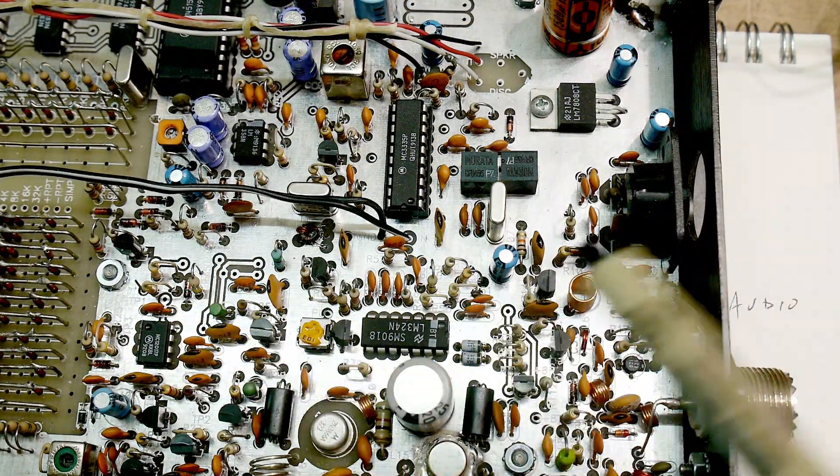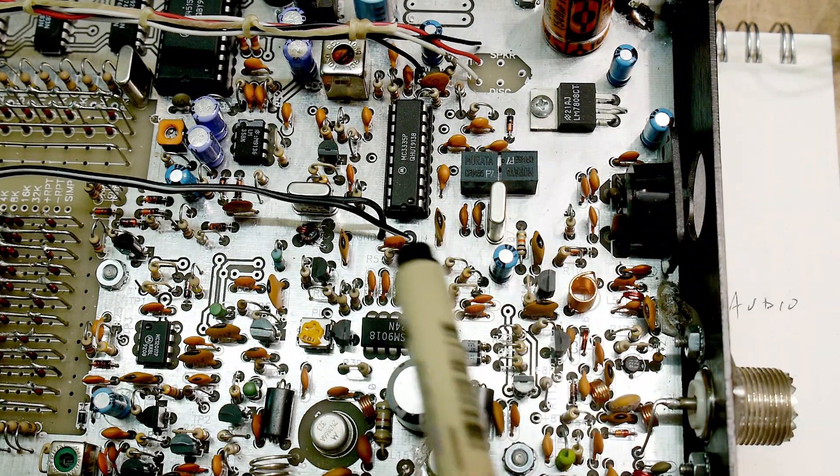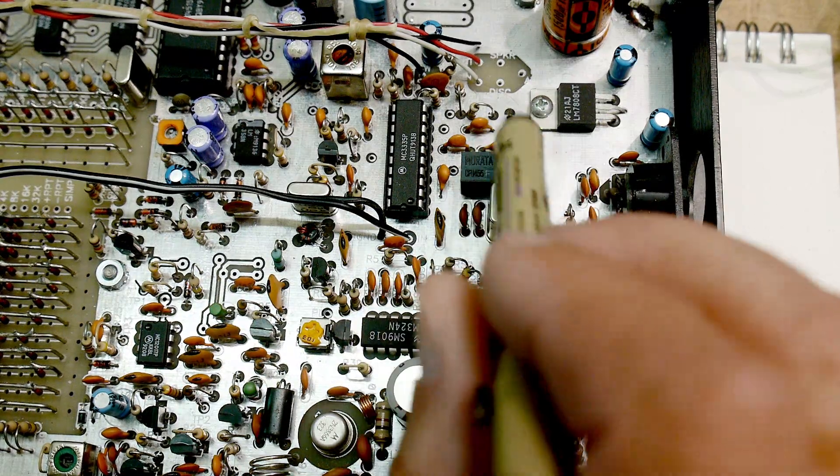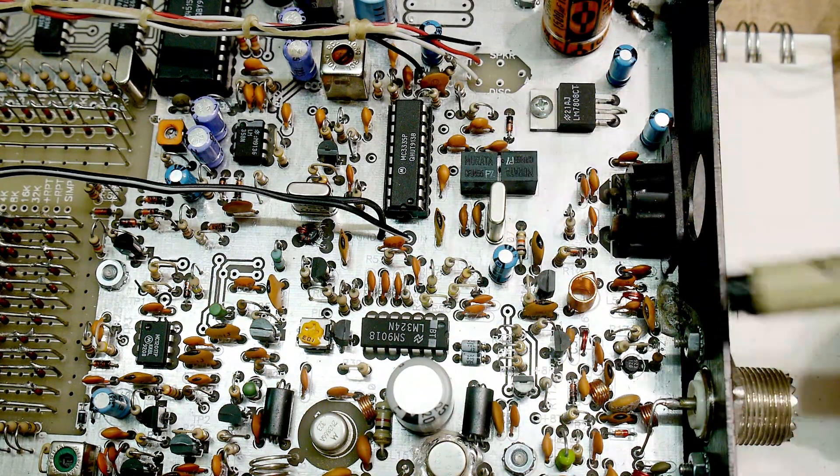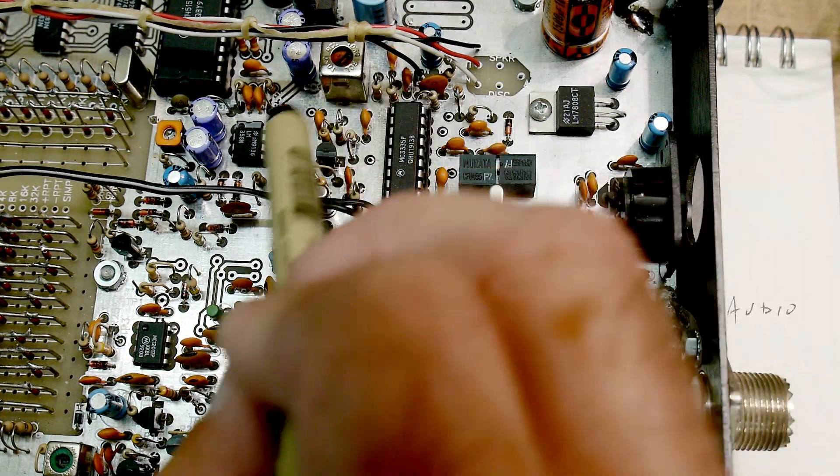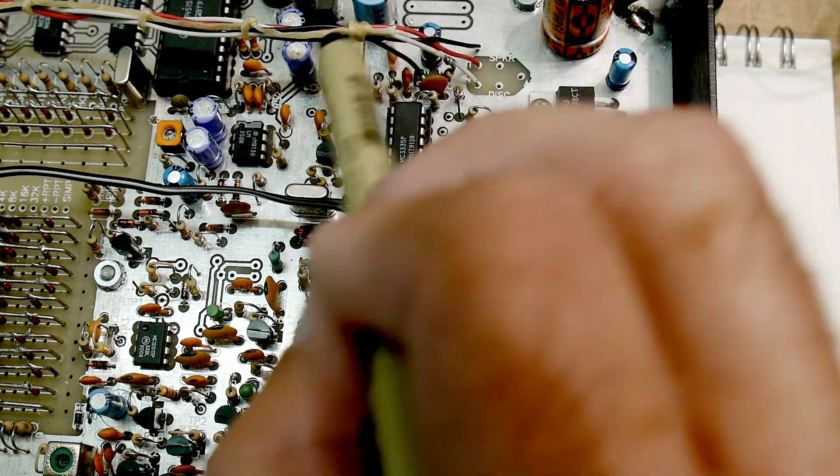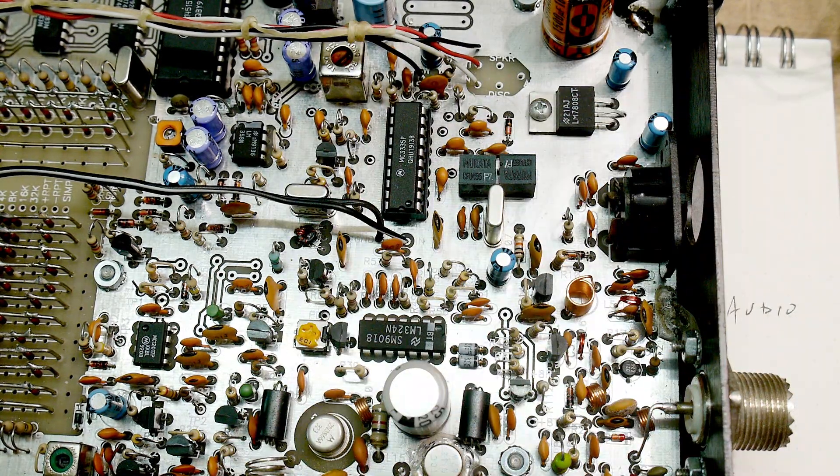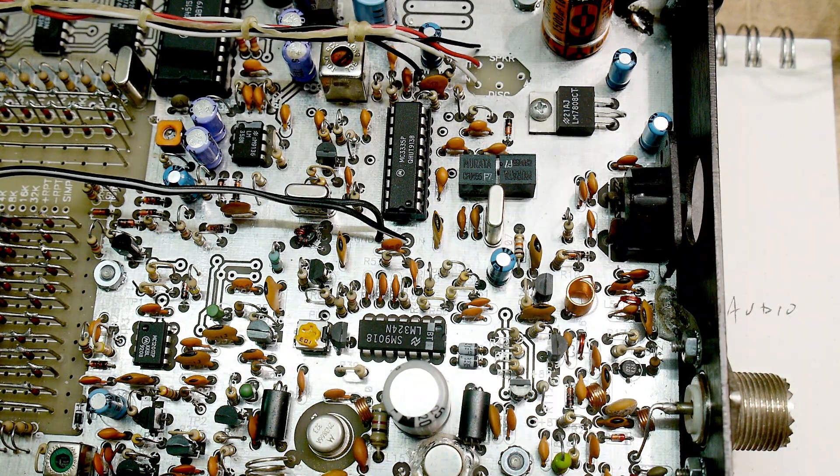And if we look at our radio, this is the receive chip right here. We can see our 455 kilohertz filters, one here, one here. Here's one of the crystals, here's the other crystal. So the receive section is right here.